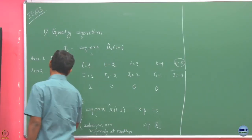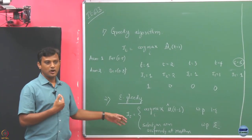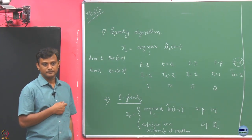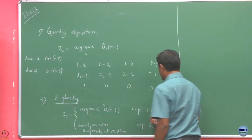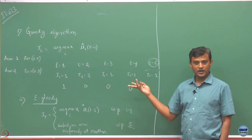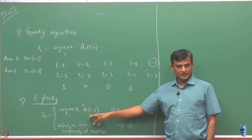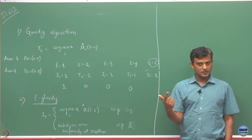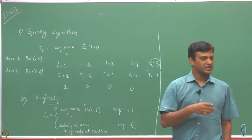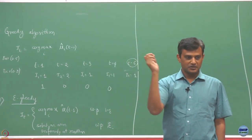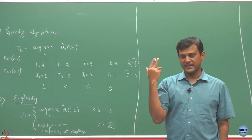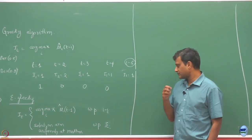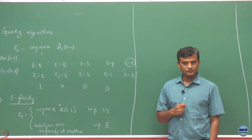Epsilon-greedy tries to overcome the greedy problem, but the question is how to choose epsilon. If you choose epsilon to be 0, this is the same as the greedy algorithm — all the time you will be selecting an arm greedily. But if you make epsilon equal to 1, you will always be selecting an arm uniformly at random. If you select an arm uniformly at random, on average you will be selecting each arm an equal number of times, so you have only selected the optimal arm 1/k fraction of the rounds. The regret is going to be linear in that case.